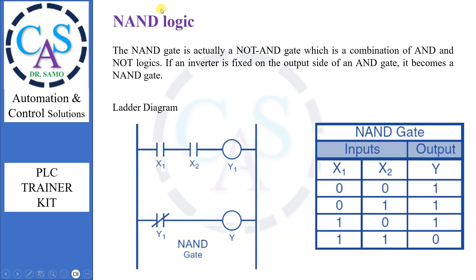Move further for NAND logic. The NAND gate is actually a NOT AND gate, which is a combination of AND and NOT logics. If an inverter is fixed on the output side of an AND gate, it becomes a NAND gate. The ladder diagram exhibits the NAND logic. From the table: if both inputs are low, the output will be high. If input 1 is low and input 2 is high, the output will be high. If input 1 is high and input 2 is low, the output will be high. If both inputs are high, the output will be low.